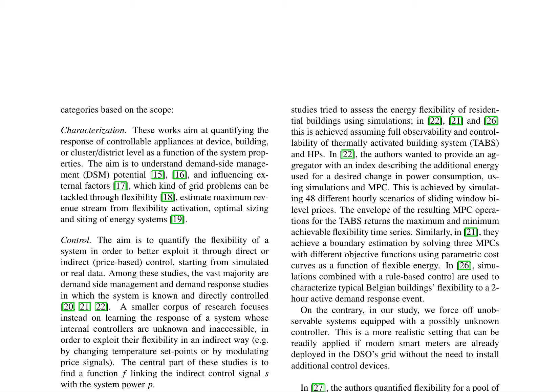However, these studies assume full observability and controllability of the system. In contrast, this study focuses on unobservable systems with unknown controllers, a more realistic setting that can be readily applied with modern smart meters. The proposed approach uses a forecaster or energy oracle as a surrogate model of the system, allowing for a single simulation using a pseudorandom control signal and overcoming the issue of initial state synchronization.